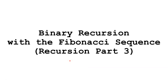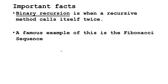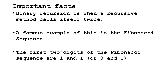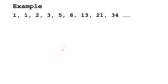In this Java tutorial, we are going to learn about binary recursion and look at it using the example of the Fibonacci sequence. Binary recursion is when a recursive method calls itself twice in each run. The first two digits of the Fibonacci sequence are 1 and 1 (or sometimes 0 and 1). Later digits are calculated by adding the two previous digits: 1 plus 1 equals 2, then 1 plus 2 equals 3, 2 plus 3 equals 5, 3 plus 5 equals 8, and so on. This is well-suited for recursion because we calculate the current value by adding the two previous values, which can also be calculated by adding their two previous values.